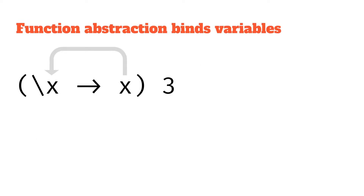Let's look at that first rule: function abstraction binds variables. Here we have an expression where we've got a function abstraction on the left — backslash x arrow x. That x in the function body is bound by the function abstraction, because the function abstraction is using x as a parameter. We might intuitively think of it as that x being created by the function, and that's basically what we mean by bound variables.